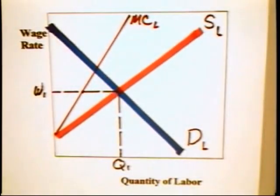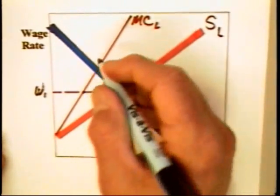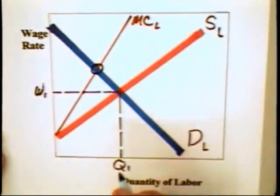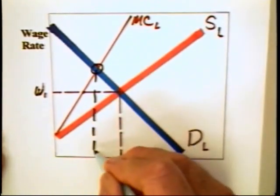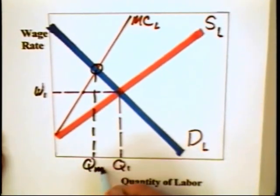Here is the same basic graph that we had before. We deduced with the messy graph that the profit maximizing employment level for monopsony would be equal to QM.